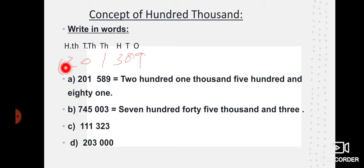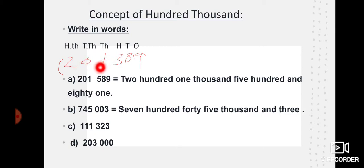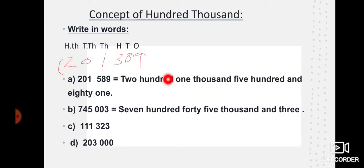Okay — we will not say 'two hundred thousand.' We will read it as only 'two hundred one thousand.' Why? Because students, here ahead we have one thousand. If there were a zero there, we would write it as 'two hundred thousand.' But here we have one in the thousands place, so we write: two hundred one thousand, five hundred and eighty nine.